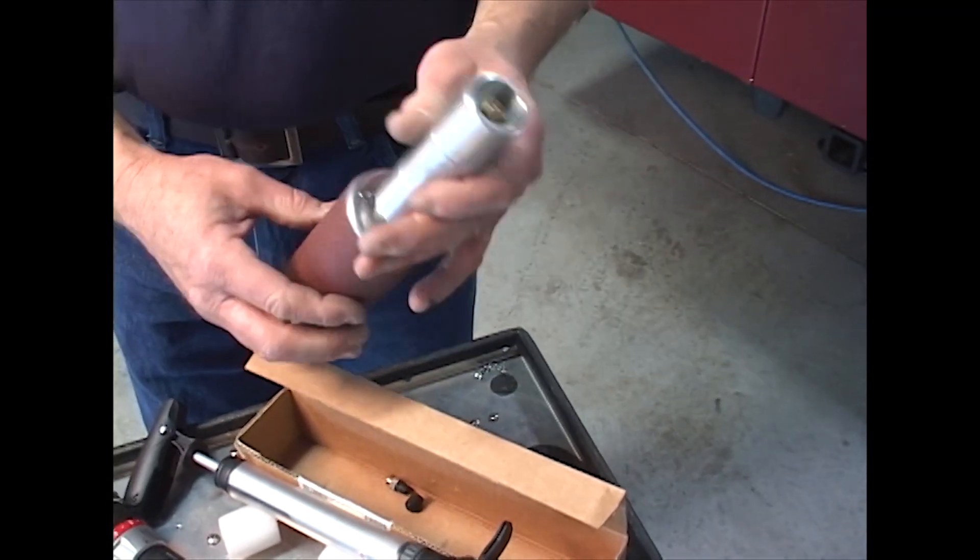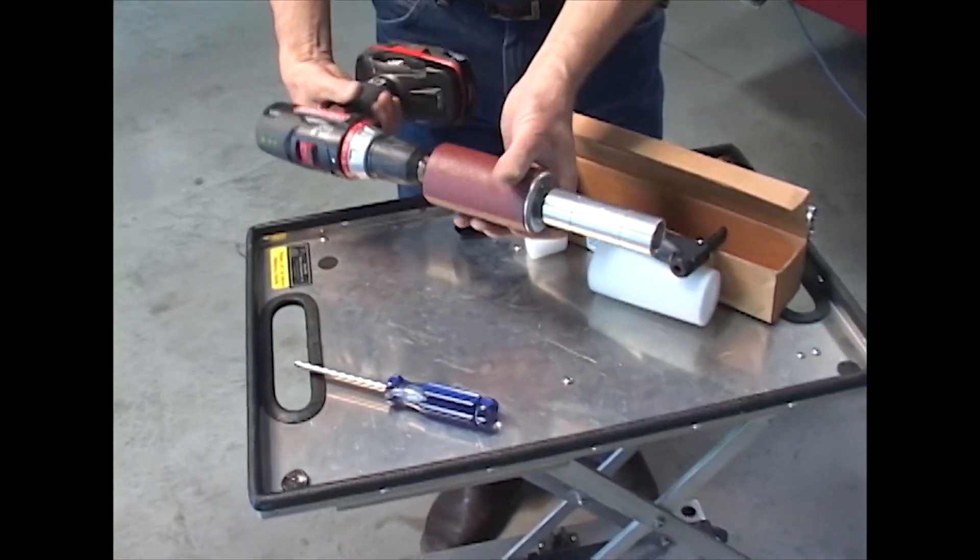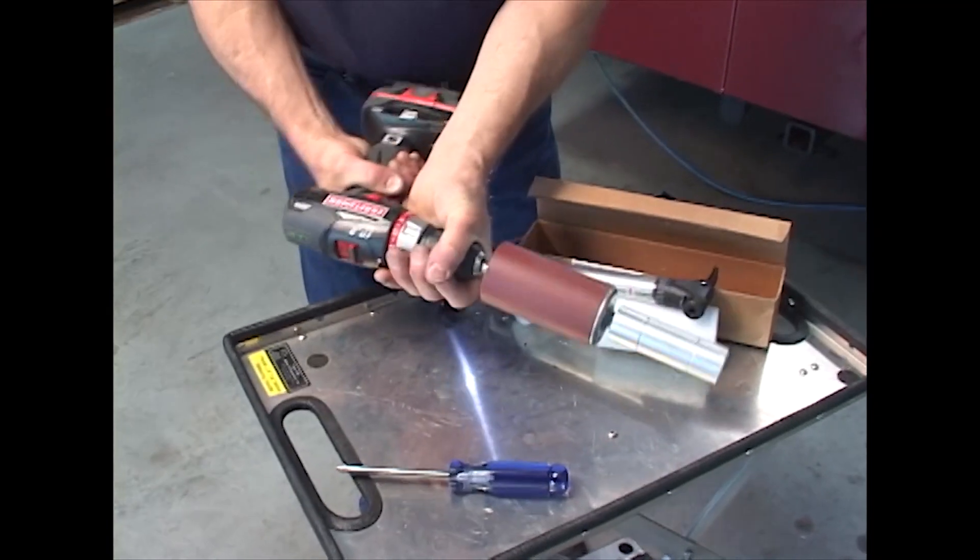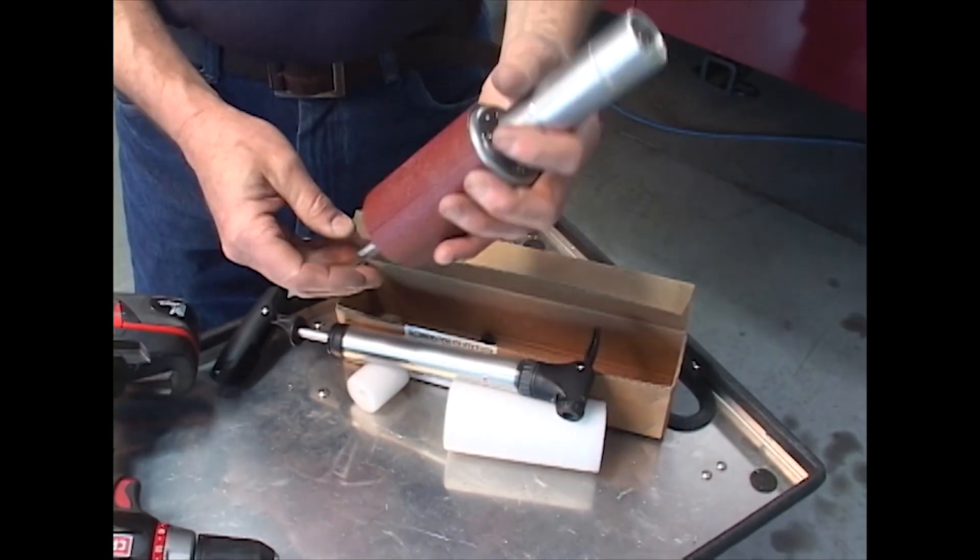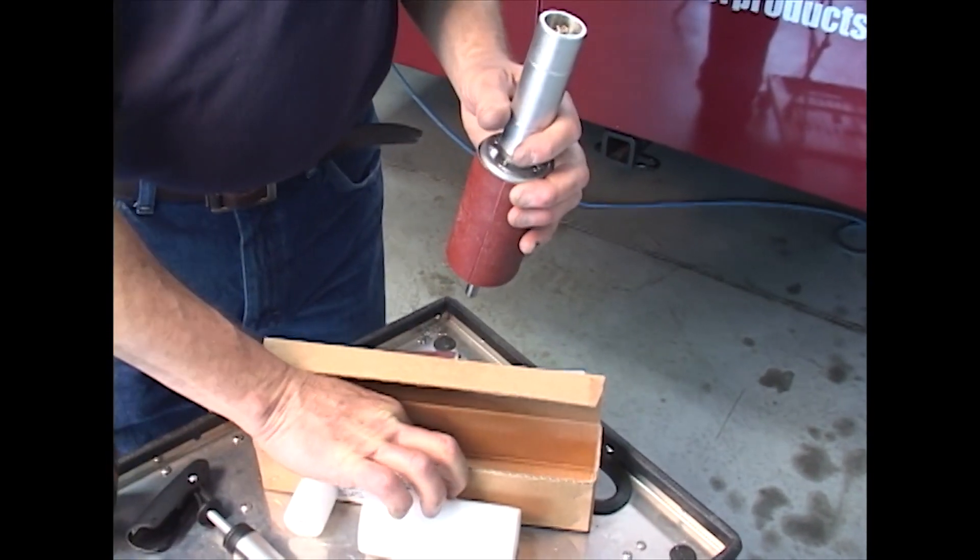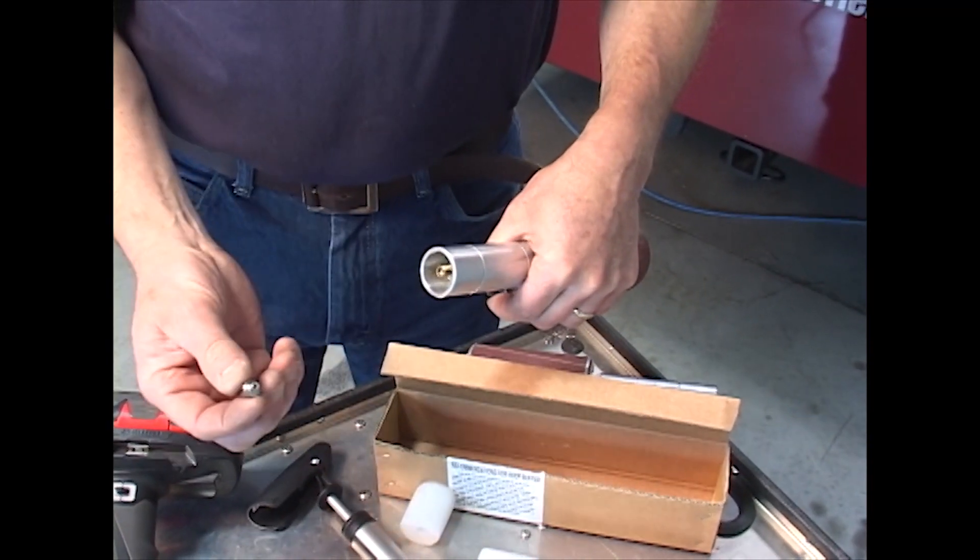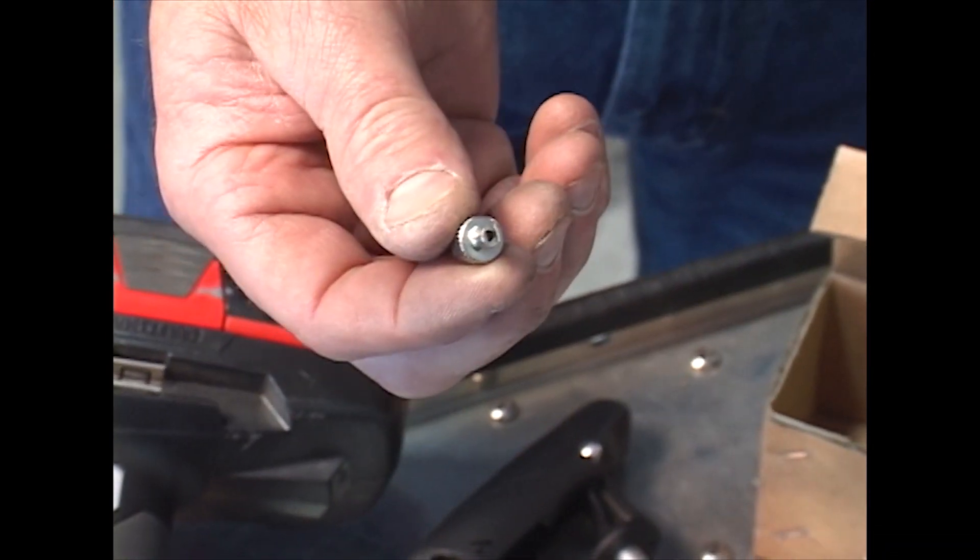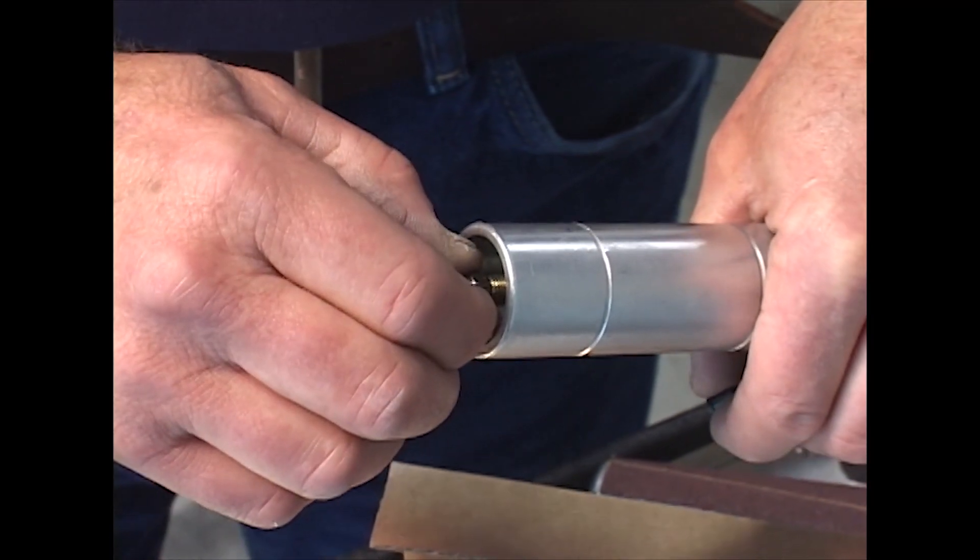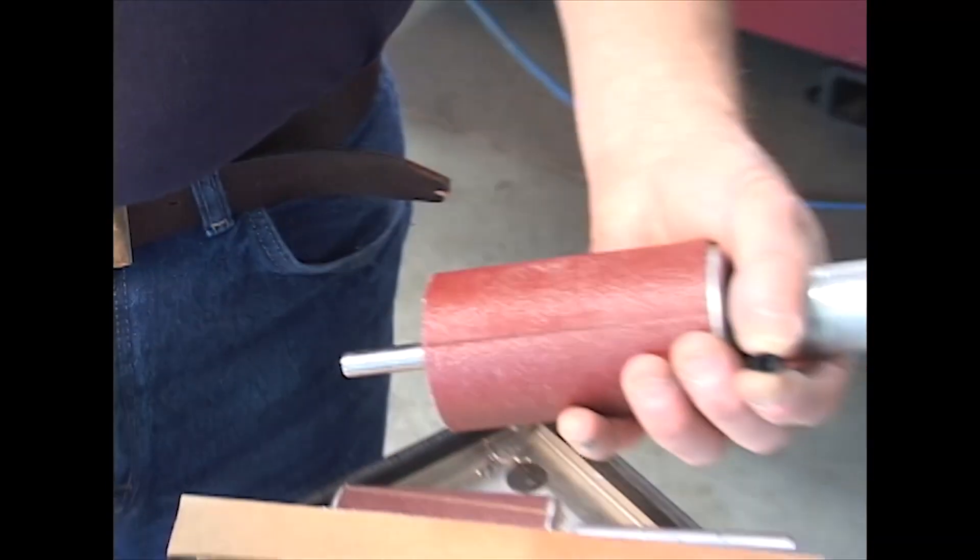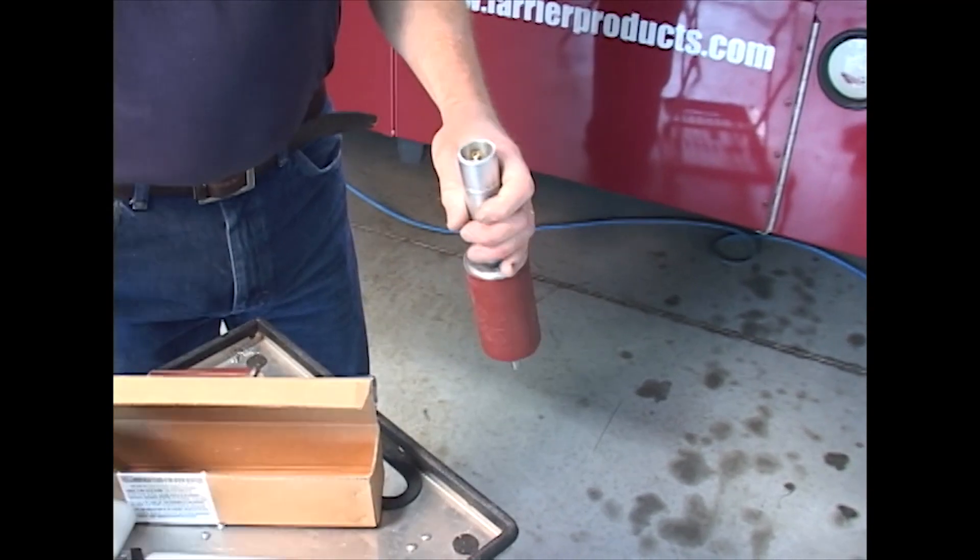In case you experience some leakage, the first step would be to make sure that your stem valve is tight. That's why you're provided with this cap that has a stem valve tightener. If the stem valve is tight and your unit is still leaking, then you should submerge the unit. Obviously you need to inflate the unit first.